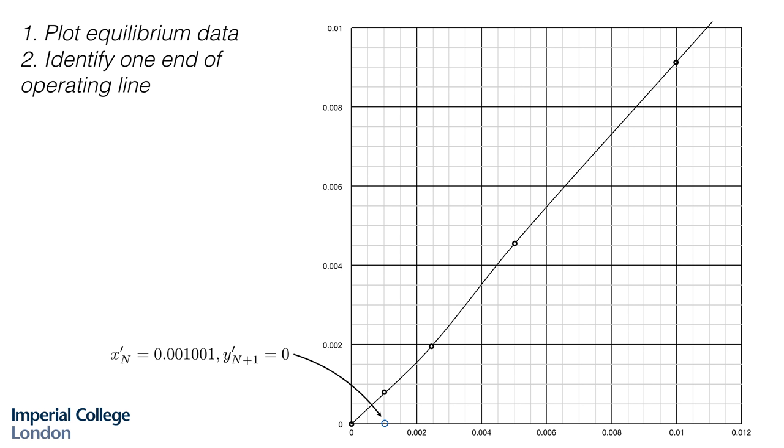Our next step in finding the minimum solvent flow rate is to identify one end of the operating line. We know both the X and Y coordinates of this point here. The X coordinate is the final concentration of nicotine in the aqueous phase. The Y coordinate is our fresh solvent feed. It's pure kerosene, so it's 0. We can place it there.